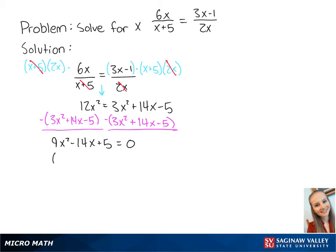The left side can be factored out to become 9x minus 5 times x minus 1. Now we have the equations 9x minus 5 is equal to 0, and we have x minus 1 equals 0.